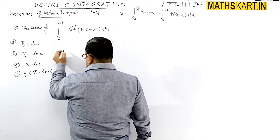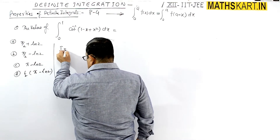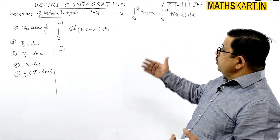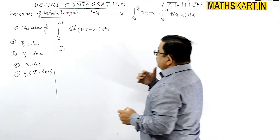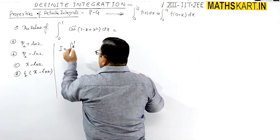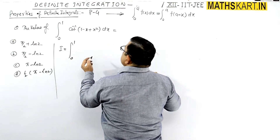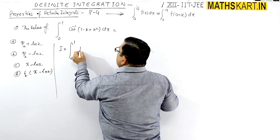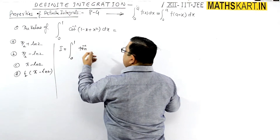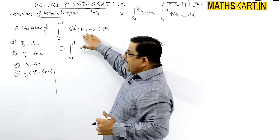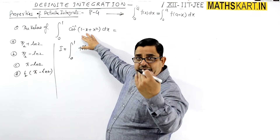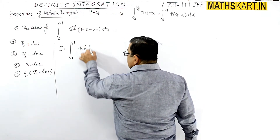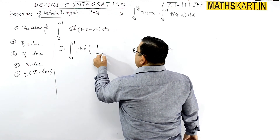Anything involving cot inverse doesn't solve easily, so since it's given in cot inverse form, the best approach is to change it. We rewrite the integral from 0 to 1 as tan inverse of one upon (1 minus x plus x squared) — because the angle reciprocates when you write tan inverse.